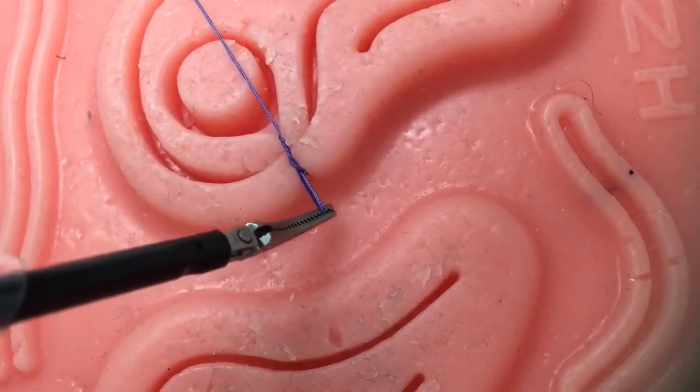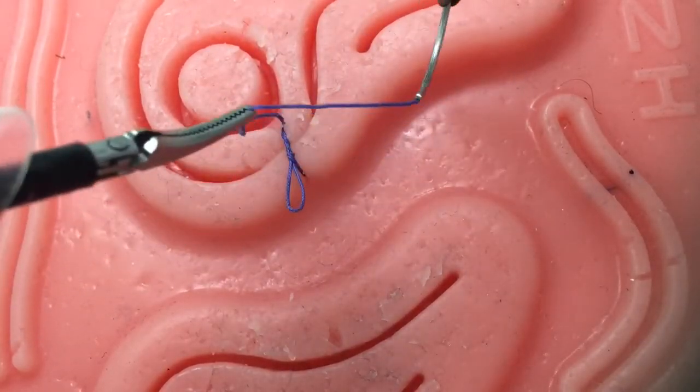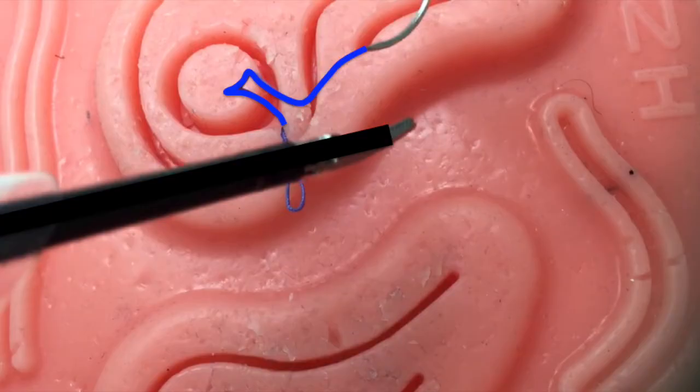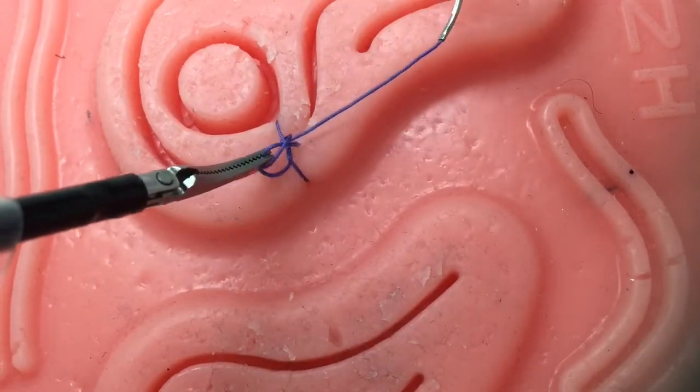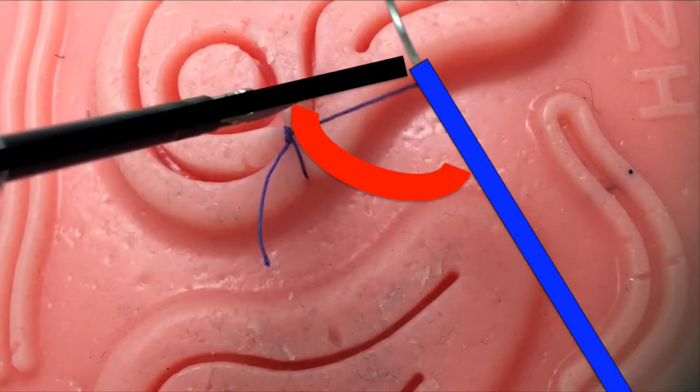Remember to alternate your throws by placing your left instrument on opposite sides of the suture. And again, always rotate the needle to line up with the suture to minimize the instrument to suture angle.